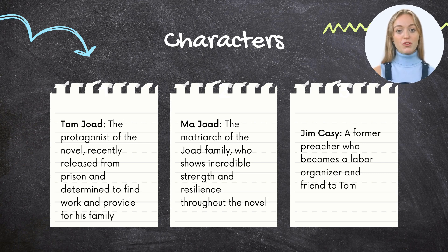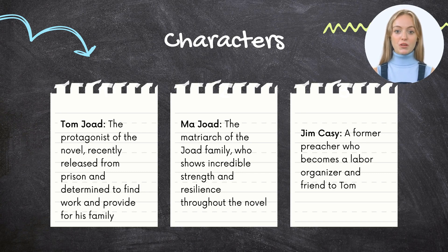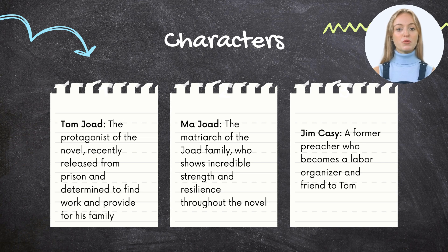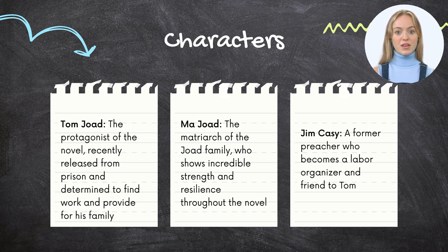Jim Casy is a former preacher and a moral guide to the Joad family. He is grappling with questions of faith and social justice and has left the church due to his disillusionment with the institutional church. He serves as an intellectual voice for migrant workers, challenging them to think critically about their situation and consider larger systemic issues causing their suffering. He also provides comfort and spiritual guidance in times of crisis and is seen as a symbol of the struggle for social justice and collective action. His character embodies themes of faith, social justice, collective action, and transformation in the face of hardship.